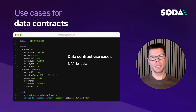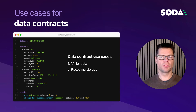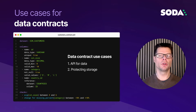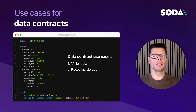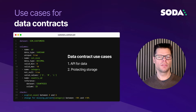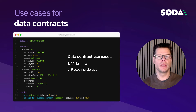The second use case is protecting storage. Databases have schemas to prevent bad data from getting inserted into tables. Kafka has schema registries to prevent bad data from entering topics. In the same way, analytical datasets will get data contracts to prevent bad data from getting stored in analytical data stores.